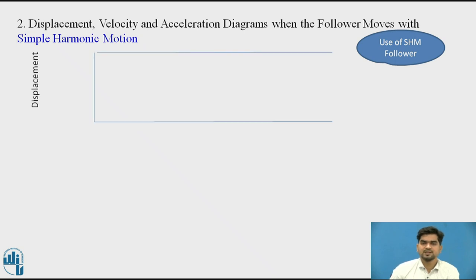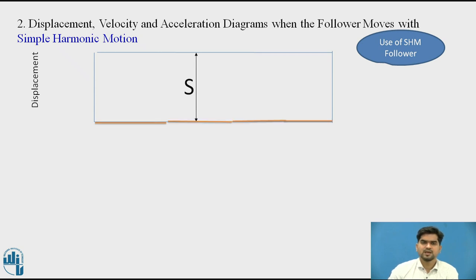This horizontal line indicates one complete rotation of the cam, that is 360 degrees — the total angular displacement of the cam. S indicates the stroke length, otherwise called the lift of the follower, meaning the distance from minimum position to maximum position covered by the follower. We have divided the angular displacement line — the x-axis — into 4 sections: first is the rise, then dwell, then fall, and again dwell.